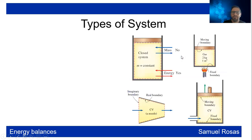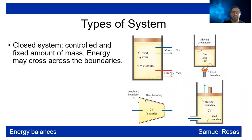There are types of systems. Closed systems are controlled and fixed amount of mass. Energy may cross the boundaries. So no crossing of mass, energy might cross. If energy does not cross, then it is a special case called isolated system. And here you have this fixed boundary, but you have this moving boundary in this closed system.